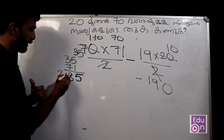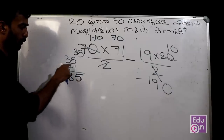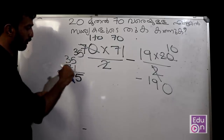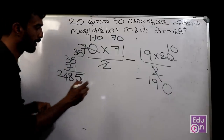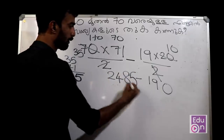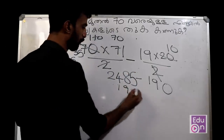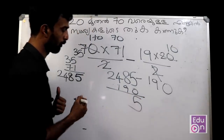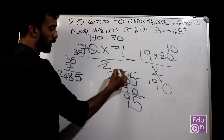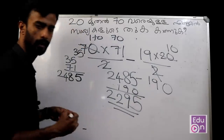Eighty, eighty, ninety, ninety. Eighty minus one ninety — answer ninety. Ninety, eighteen, one. Two-two-nine-five answer.